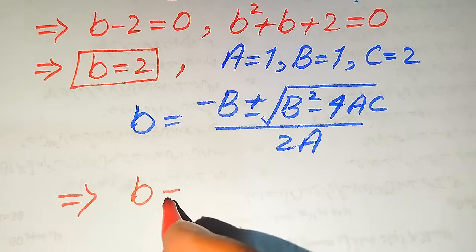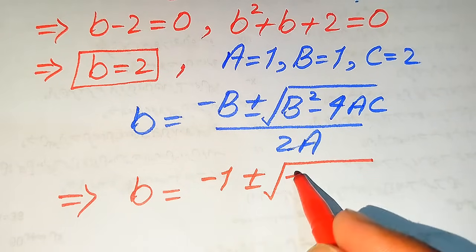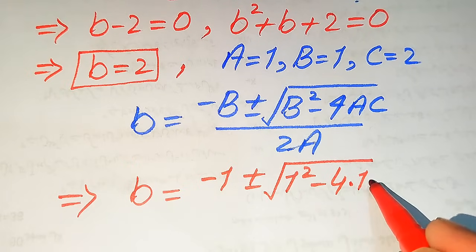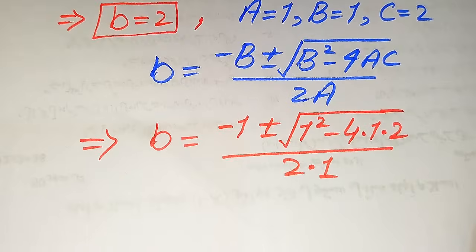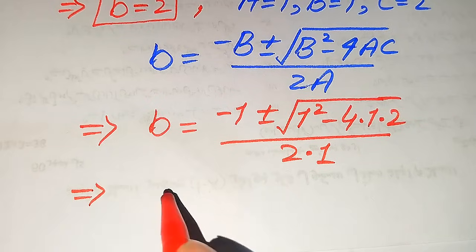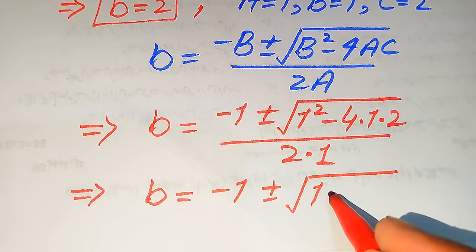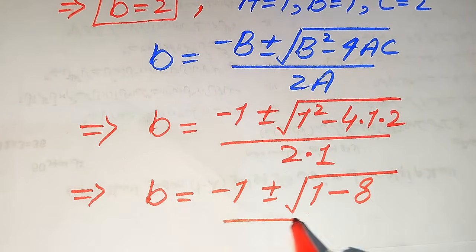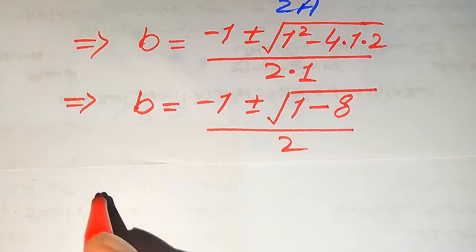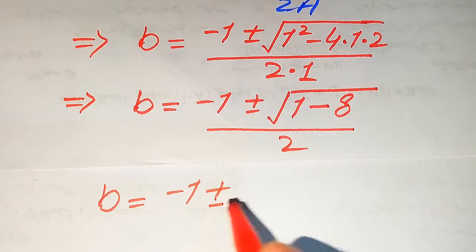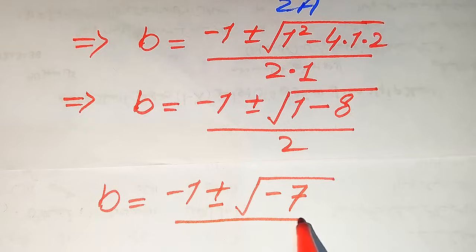Substituting the values of A, B, and C, we get b equals minus 1 plus or minus the square root of 1 squared minus 4 times 1 times 2, divided by 2 times 1. Simplifying, this becomes minus 1 plus or minus the square root of 1 minus 8, divided by 2, which gives minus 1 plus or minus the square root of minus 7, divided by 2.